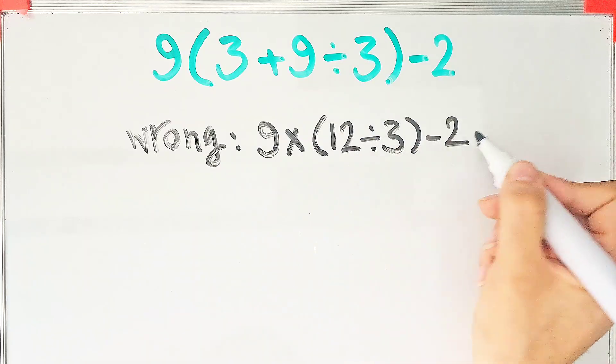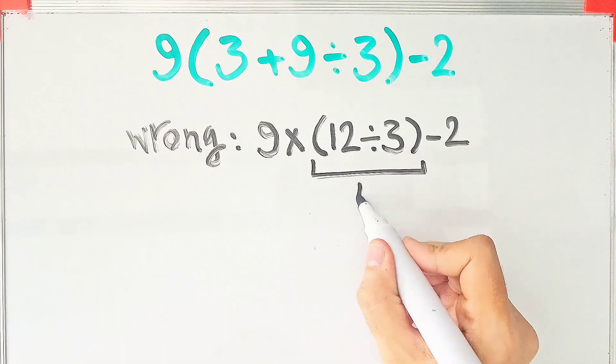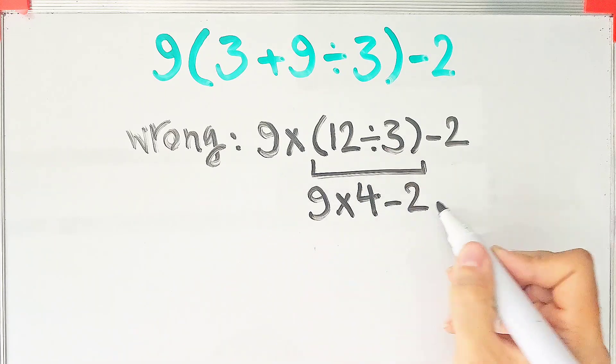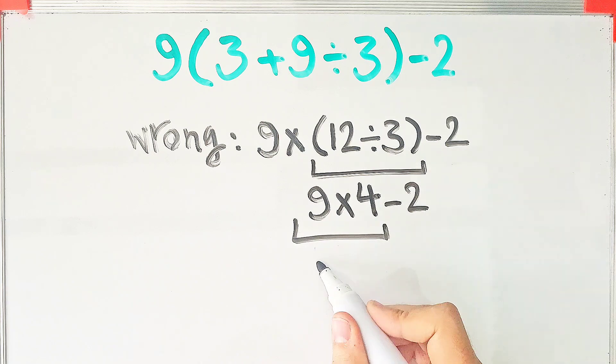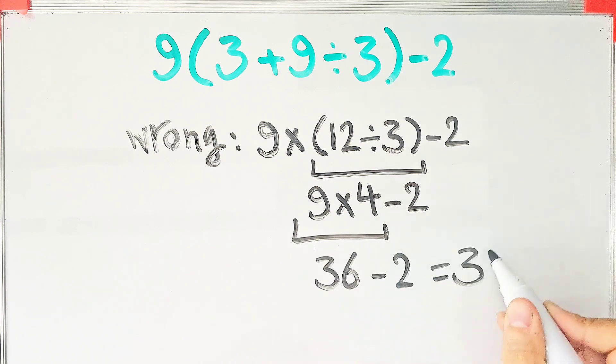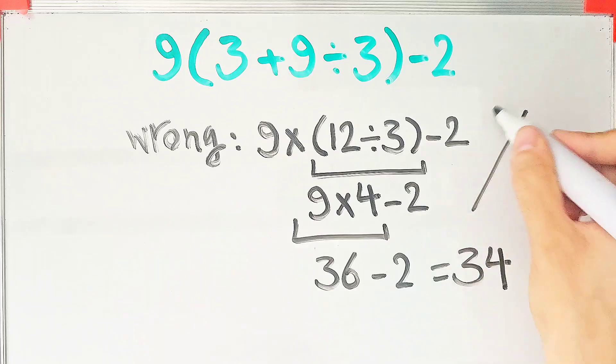12 divided by 3 equals 4. 9 times 4, then minus 2. In this step, they do this multiplication. 9 times 4 equals 36, and 36 minus 2 equals 34. But this answer is definitely wrong.